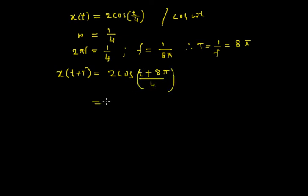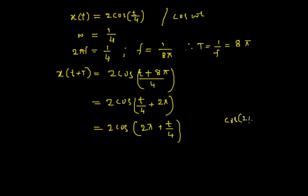I will simplify this further. I will get 2 times cosine of t by 4 plus 2 pi. In the next step, I will rearrange it. I will get 2 times cosine of 2 pi plus t by 4. And from trigonometry, I know that cosine of 2 pi plus theta equals cos theta.